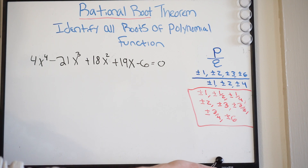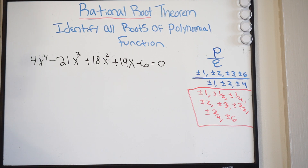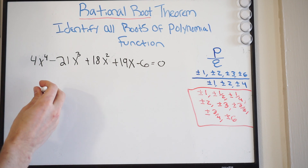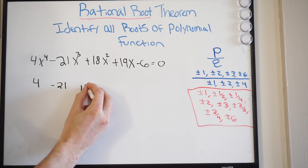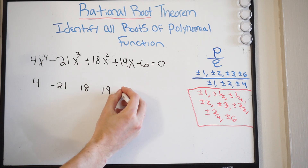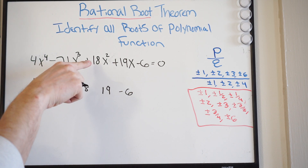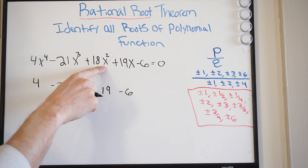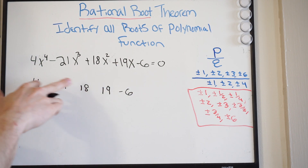Now at this point we can go ahead and use synthetic division to figure out if one of these is actually a root of this function. So if you grab one of these and we do synthetic division, let's set that up. Just make sure we didn't skip any terms — we went from x to the fourth, x to the third, x to the second, x, and then our constant. We didn't skip any terms, so we don't have to put any zeros here.